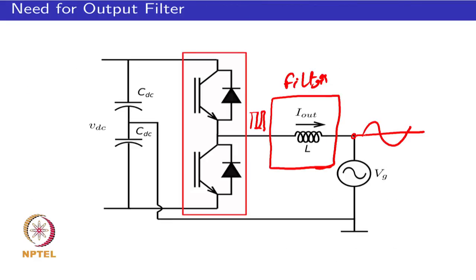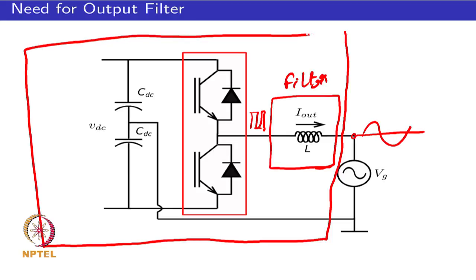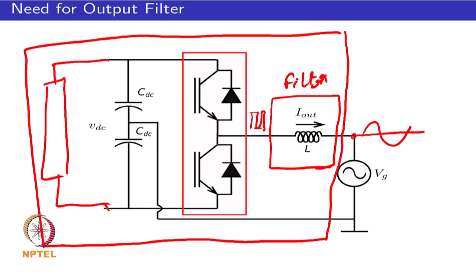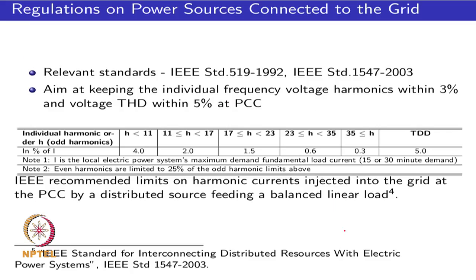For a DG system such as a solar panel with an inverter, what happens inside the equipment enclosure is the designer's choice, but the output at the AC terminal is regulated because it affects all connected users. Two relevant standards are IEEE 519, which addresses harmonics in power systems, and IEEE 1547, which covers connecting distributed resources with the electric power systems.